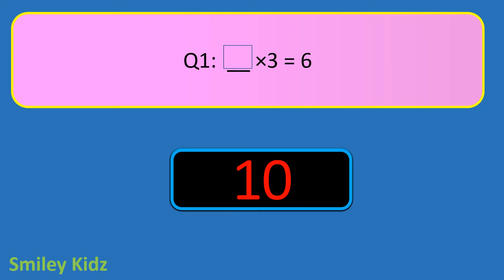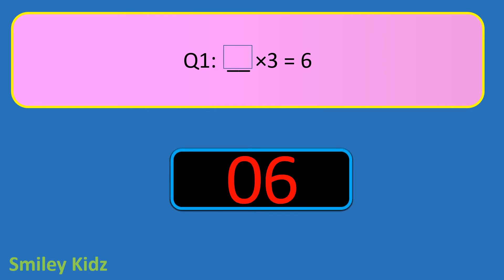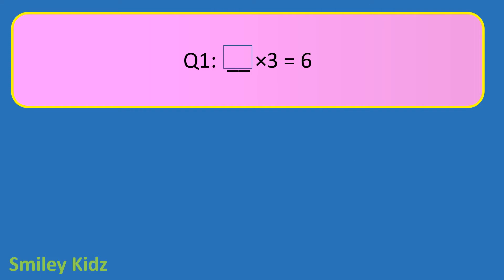Question number 1. Blank times 3 is equal to 6. Your time starts now. And your time is up. The right answer is 2. 2 times 3 is equal to 6.